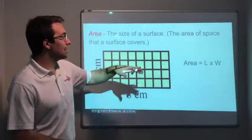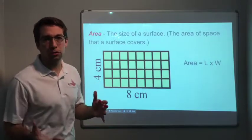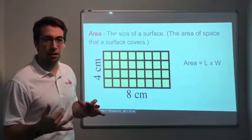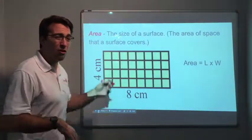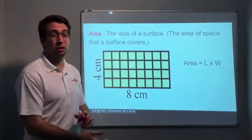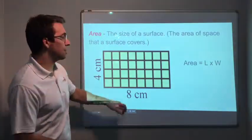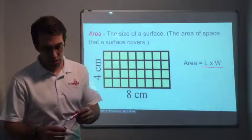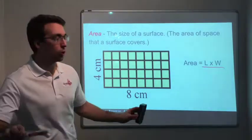And then area is the size of a surface, right? The area of a space that a surface covers. So instead of three dimensions, it's two-dimensional. You only need length and width. So instead of looking at a cube, with area, you're looking at maybe overhead. You're looking at a flat piece of paper. It's only got two dimensions. There's no depth to it. There's no height. So four centimeters times eight centimeters. Area is length times width. So volume, you get the extra height. You get the third dimension. But with area, it's only two dimensions.